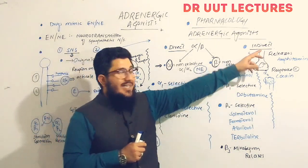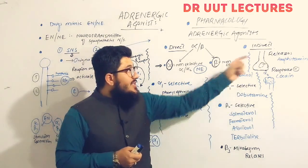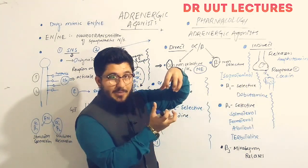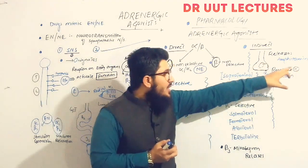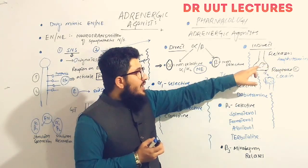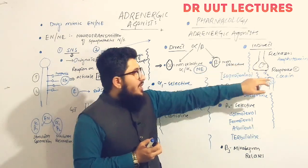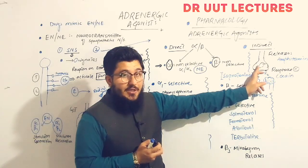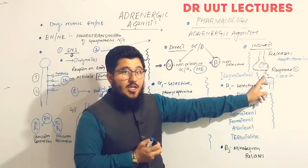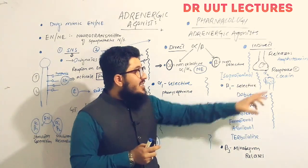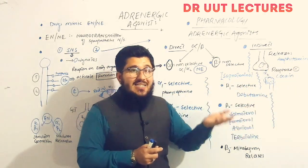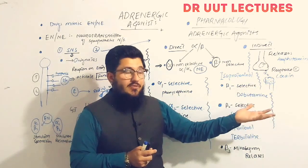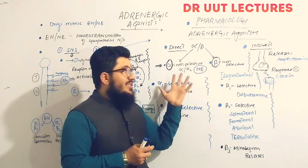Indirect acting adrenergic agonists cause an increase in the concentration of epinephrine or norepinephrine in the synaptic cleft. There are two types: releasers and reuptake inhibitors. Releasers, like amphetamine, increase the release of norepinephrine from the presynaptic neuron into the synaptic cleft. Reuptake inhibitors, like cocaine, prevent available norepinephrine in the synaptic cleft from moving back into the presynaptic neuron. Both mechanisms increase the activity of epinephrine and norepinephrine, which is why amphetamine and cocaine are called indirect acting agonists.